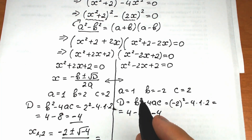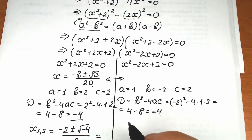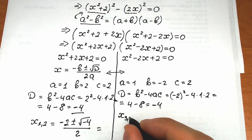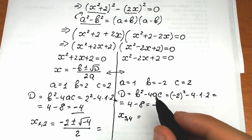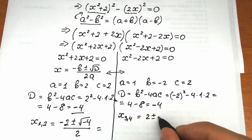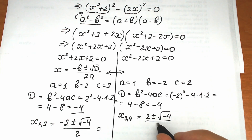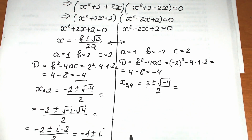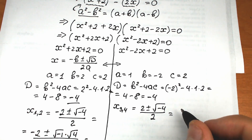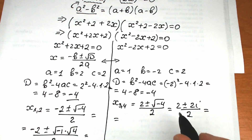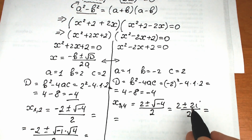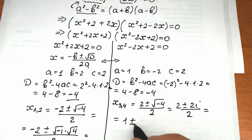Let's plug in: x₃,₄ equals minus b (which is 2), plus or minus the square root of minus 4, all over 2. Using the same approach as before, square root of minus 4 equals 2i, so we have 2 plus or minus 2i all over 2. Dividing numerator by 2 gives 1 plus or minus i.